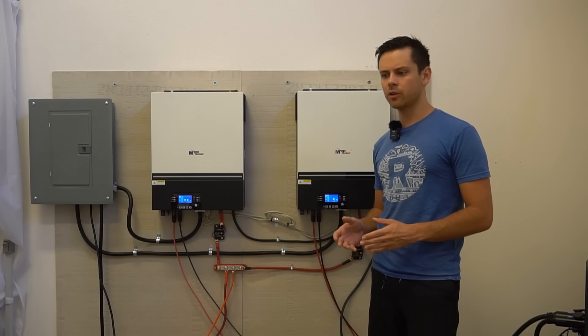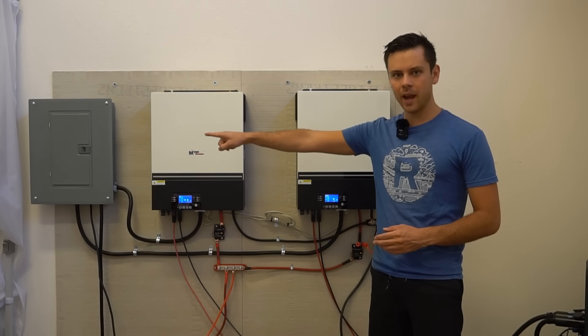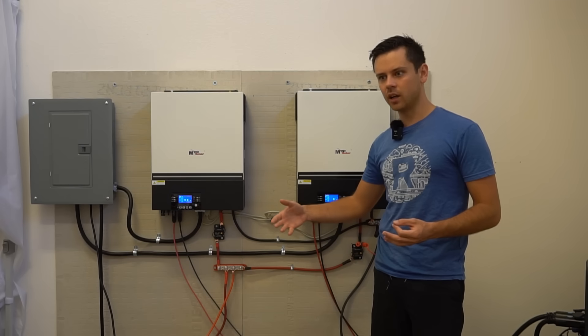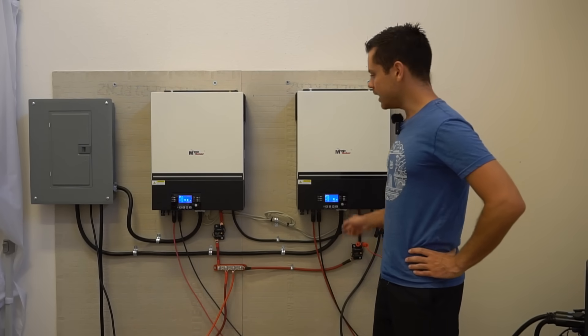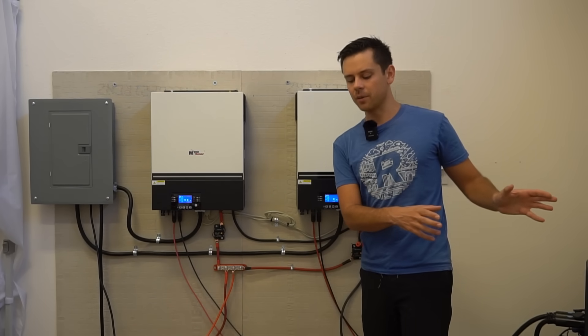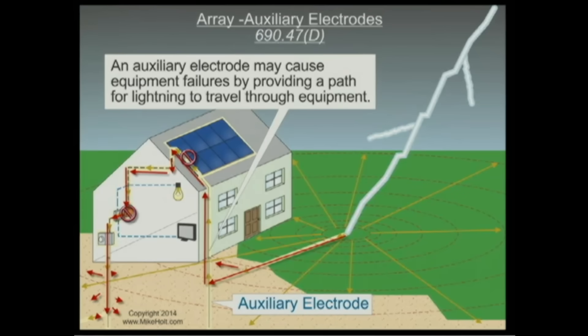Now if I were to run my own grounding electrode to that panel to a true earth ground, what I essentially would have done is created a ground loop that would run directly through my system. If I were to have a lightning strike nearby and there was a charge gradient across earth, the amount of voltage that would go through my system would destroy my components, and that would be a horrible thing.